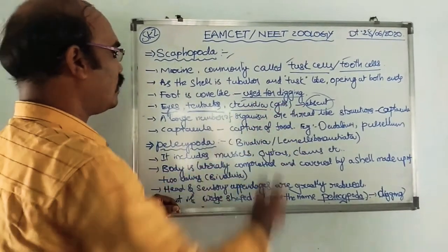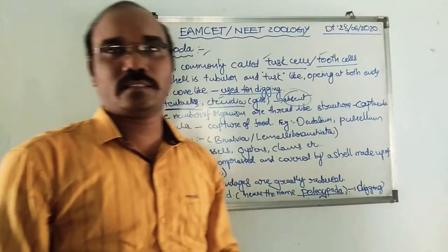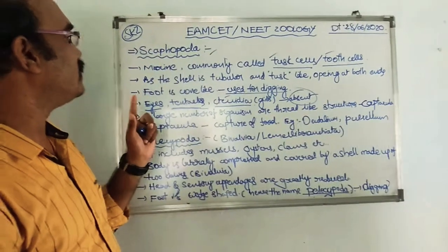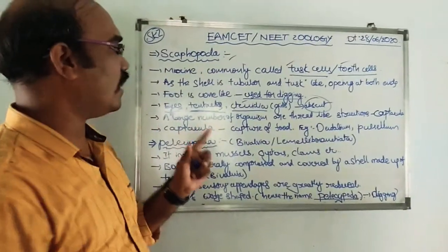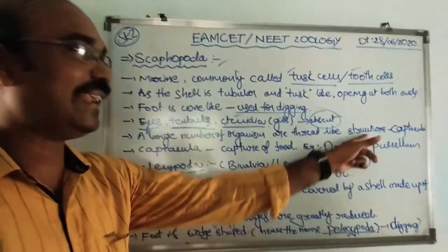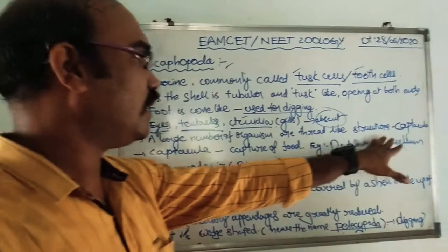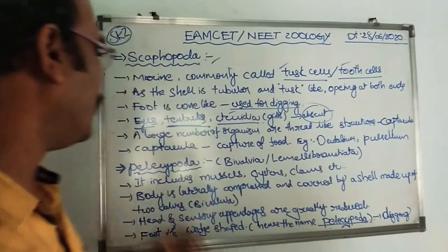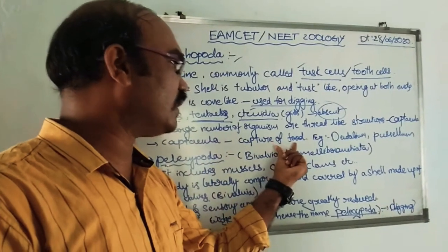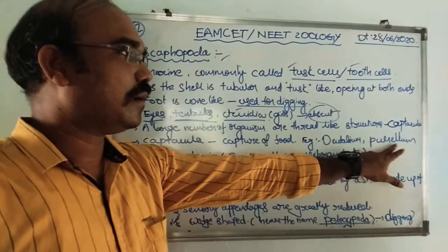In Scaphopoda, ctenidia are absent. Scaphopoda have a large number of thread-like structures. These are used for the capture of food material. For example, Dentalium pulsellum is the best example of Scaphopoda.